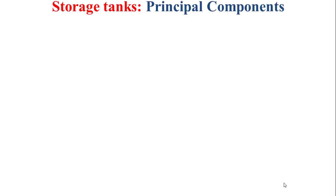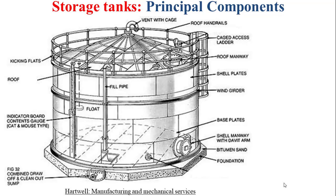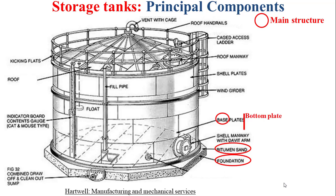First, I'll introduce the principal components of a storage tank. The figure that you see in this slide depicts a typical storage tank. The main structure is composed of a concrete foundation and a bitumen sand layer to ensure the sealing. The base is composed of welded bottom plates, and in some cases we also have welded annular bottom plates to ensure the resistance of the storage tank.